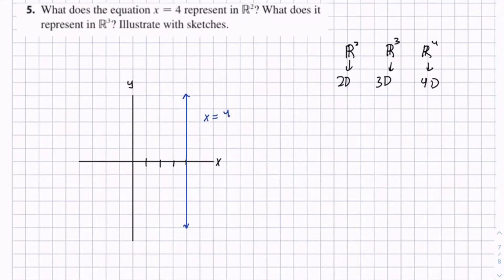So now if we're going to go up from two dimensions to three dimensions, we expect what we just drew, x equals 4, which is one dimension, to go to two dimensions.